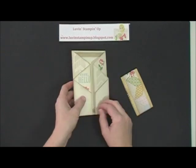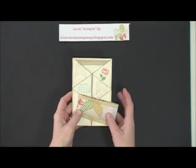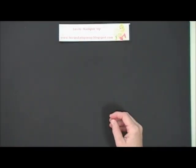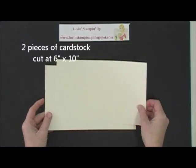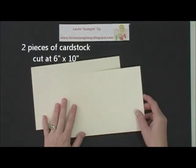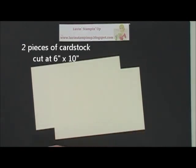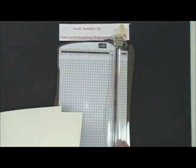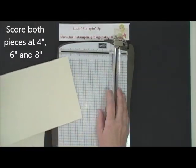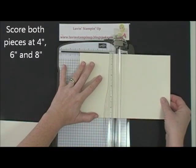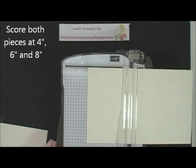And it closes like this. So I'm going to show you just the basics of how to create this card. The first thing you're going to want to do is have two pieces of paper, six by ten, and then you're going to use your Stampin' Scorer and Trimmer, and you're going to score both pieces. Let me bring out the arm here.